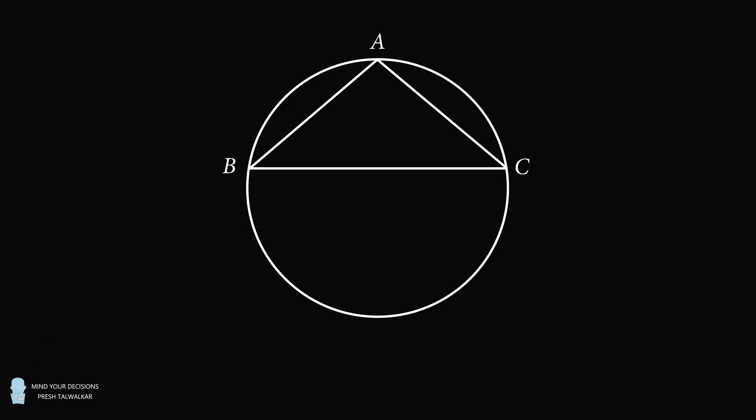Hey, this is Presh Talwalker. Triangle ABC is inscribed in a circle with AB equal to AC equal to 12. Construct chord AD that intersects chord BC at point E. Suppose AE is equal to 8.